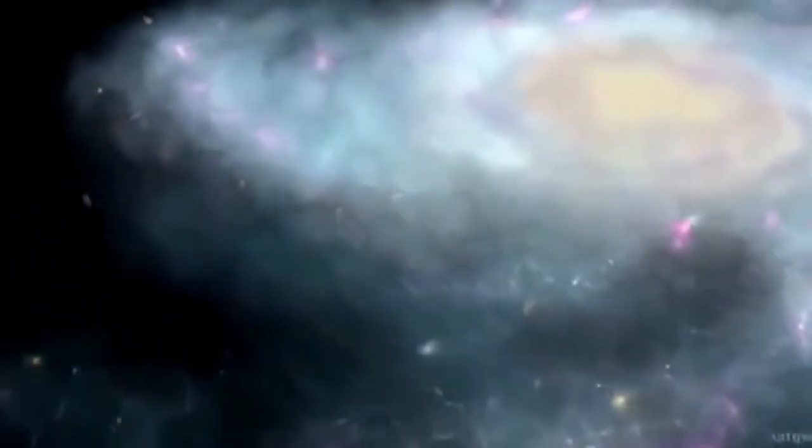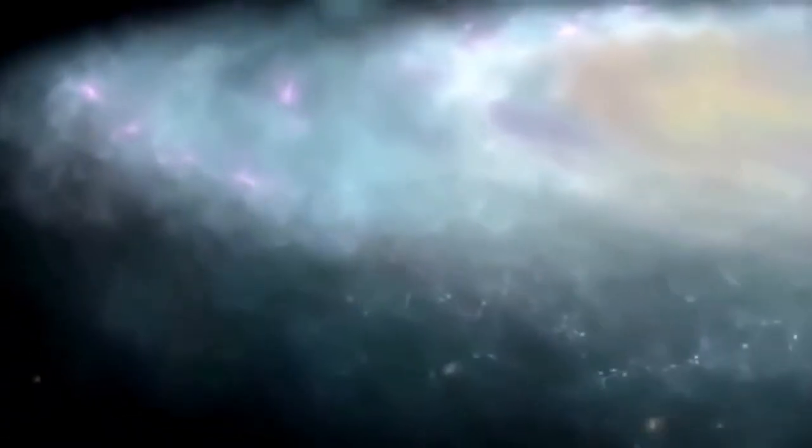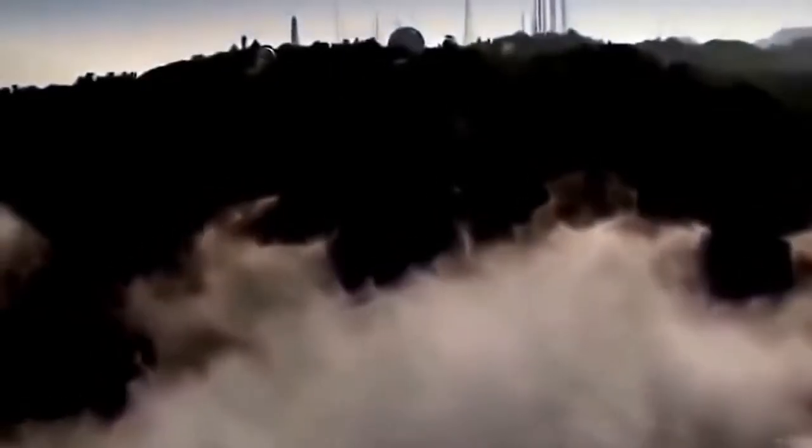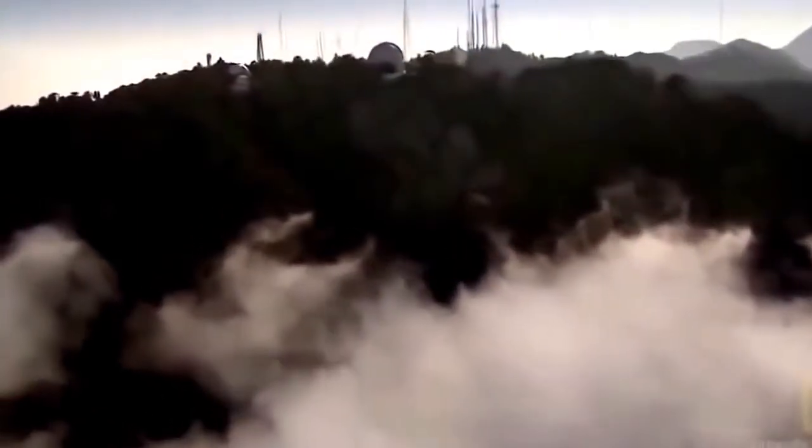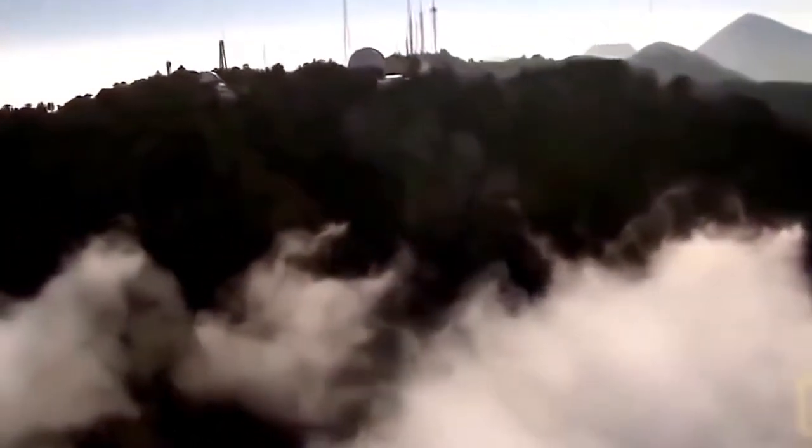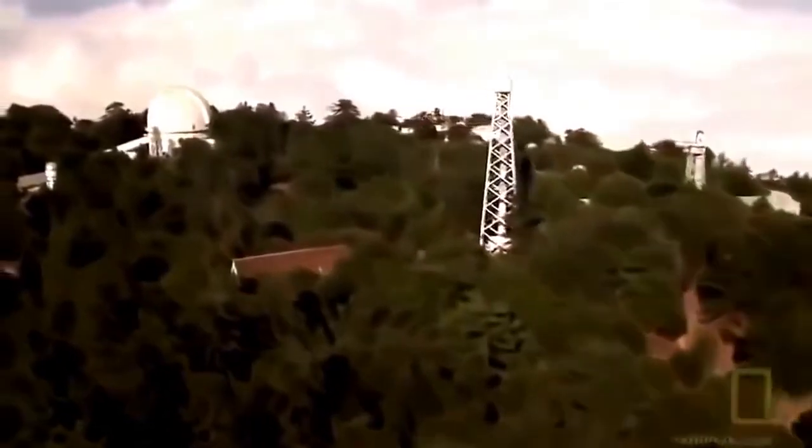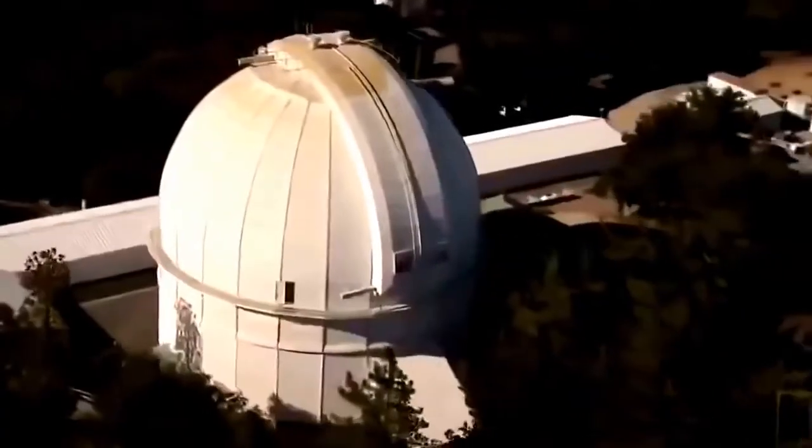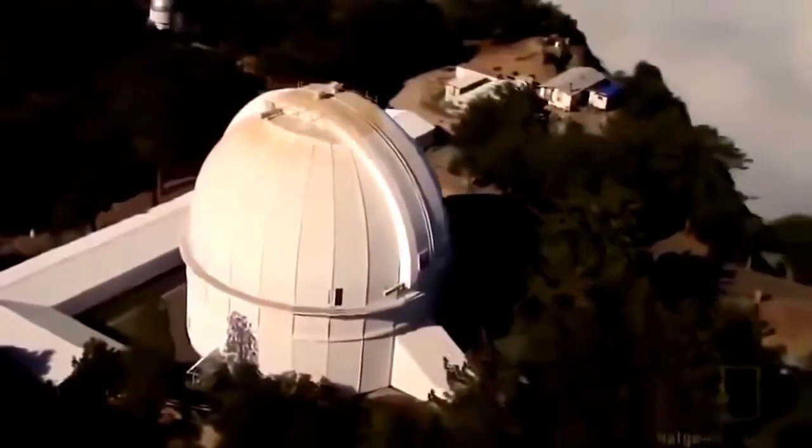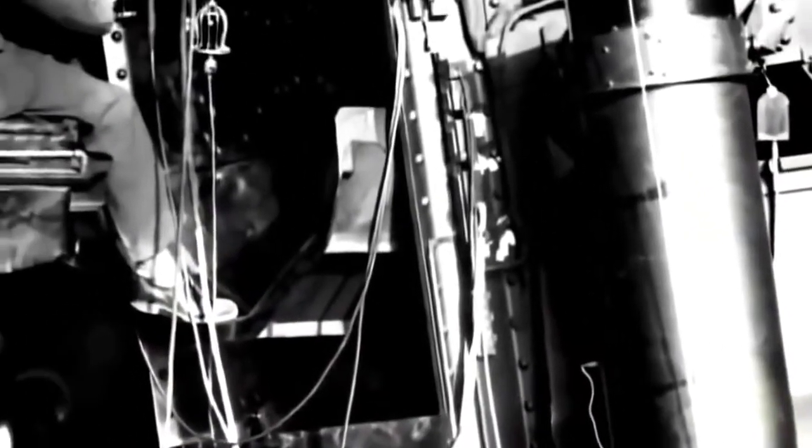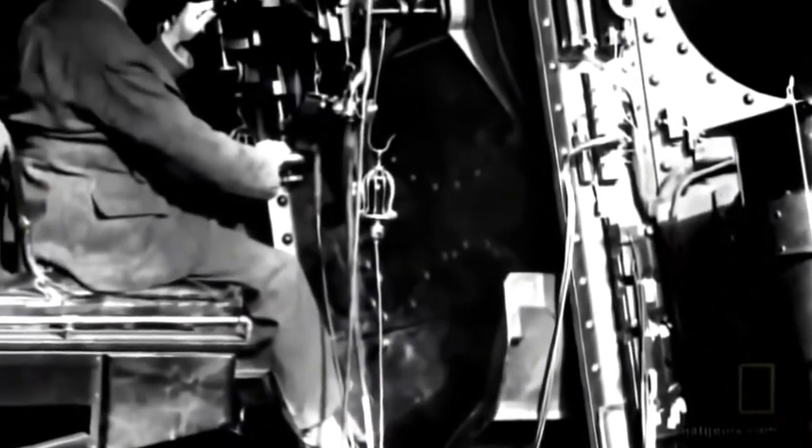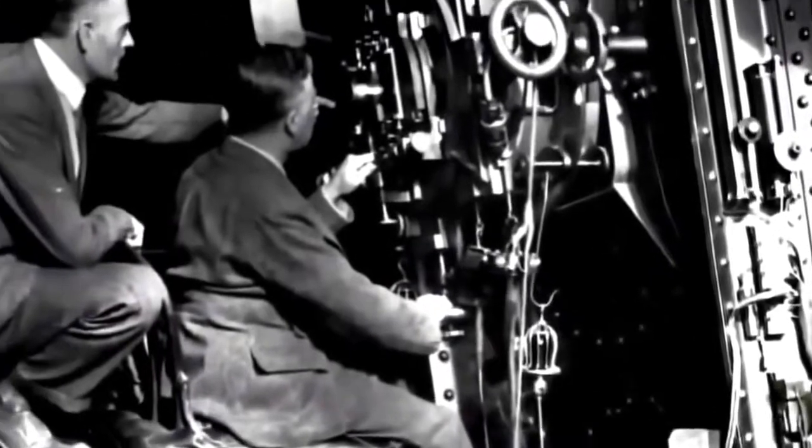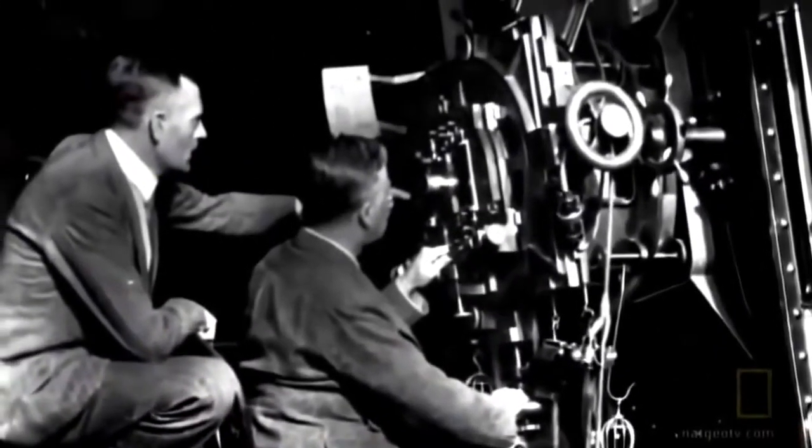However the end comes, it will be a dramatic conclusion. To understand how it all could end, scientists turn to how it began. The mystery starts to be solved here at the Mount Wilson Observatory overlooking Pasadena, California. In 1929, while looking through what was then the world's largest telescope, Edwin Hubble makes a strange discovery: the universe is expanding.